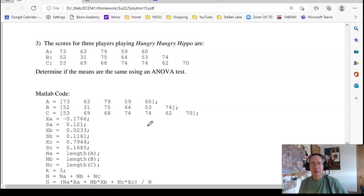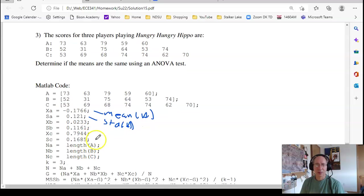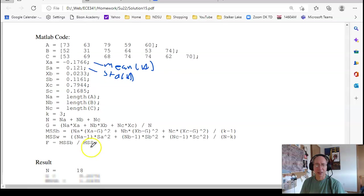Problem three: if I have the actual data. Three people play Hungry Hungry Hippo—is there a difference? Again, input the three data sets. From that, calculate the mean of A, the standard deviation of A, the length of A, and calculate your F-score.